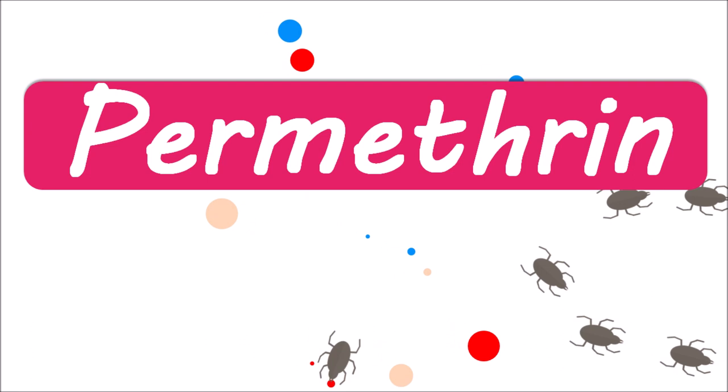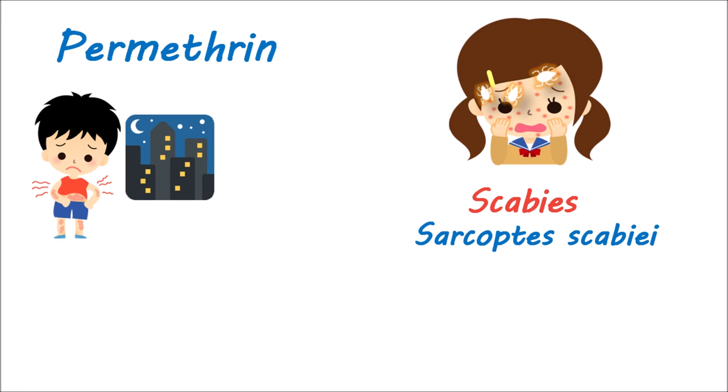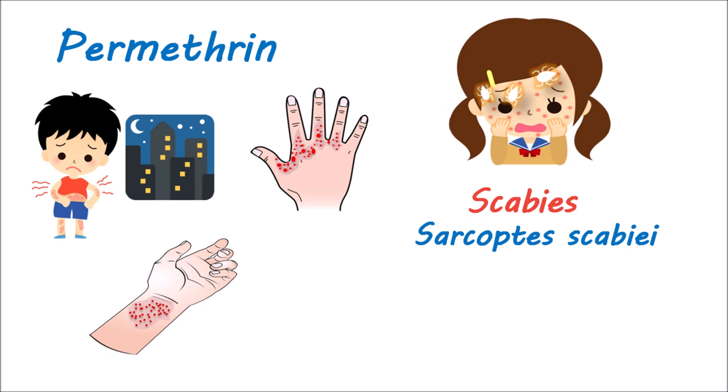Permethrin is a synthetic pyrethroid indicated for the treatment of scabies caused by tiny mites, Sarcoptes scabii. This is a contagious infection that spreads easily through physical contact, and it mainly involves intense skin itching, which is more troublesome at night. It can affect many parts of the body, producing bumps, redness, and itching. Skin folds are mainly affected, and in infants they can also affect the soles of the feet.